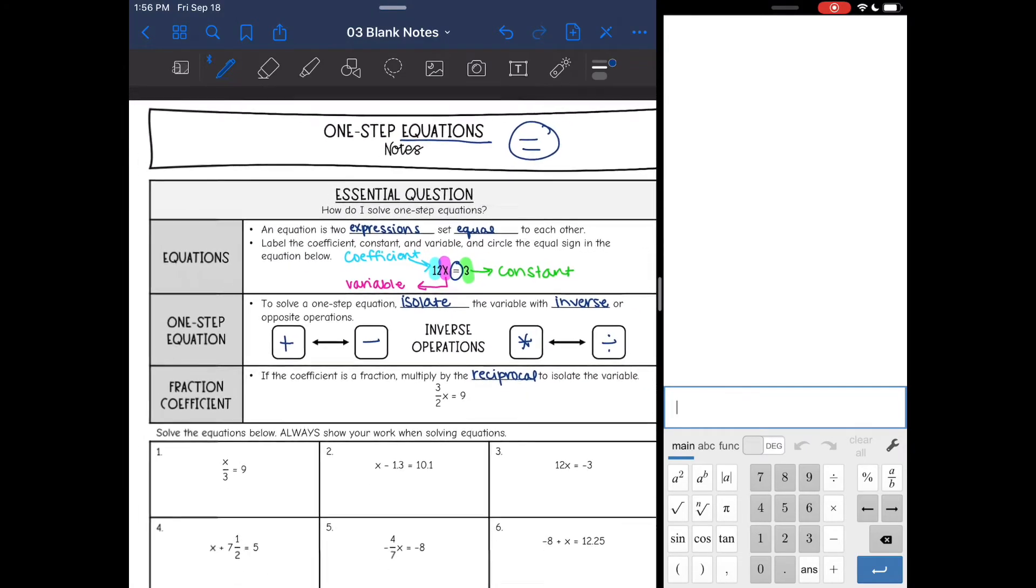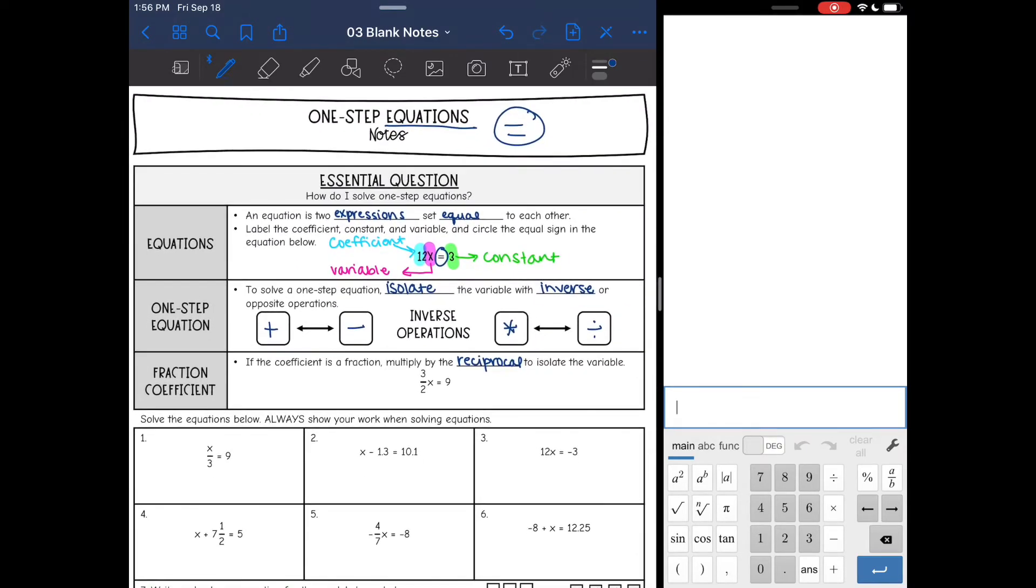Now we're going to talk about how to solve a one-step equation. We will build up to multi-step equations. Today, we're just going to do one-step equations. To solve a one-step equation, the goal is to isolate the variable, such as x, with inverse or opposite operations. If you see something added to x, you will subtract to get x by itself. If you see something subtracted from x, you will add. Multiplication and division are inverse operations as well.